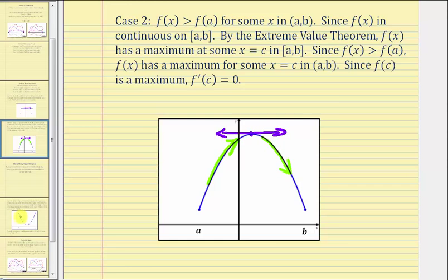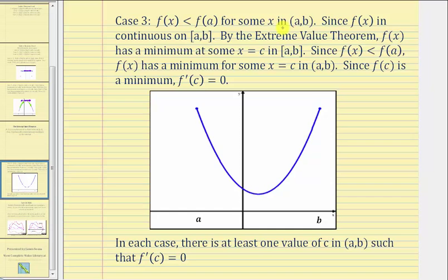For case three, f of x is less than f of a for some x in the open interval from a to b. Since f of x is continuous on the closed interval from a to b, again by the extreme value theorem, we know f of x has a minimum at some x equals c in the closed interval. But since f of x is less than f of a for some x in the open interval, f of x has a minimum for some x equals c in the open interval. And since f of c is a minimum, f prime of c equals zero.